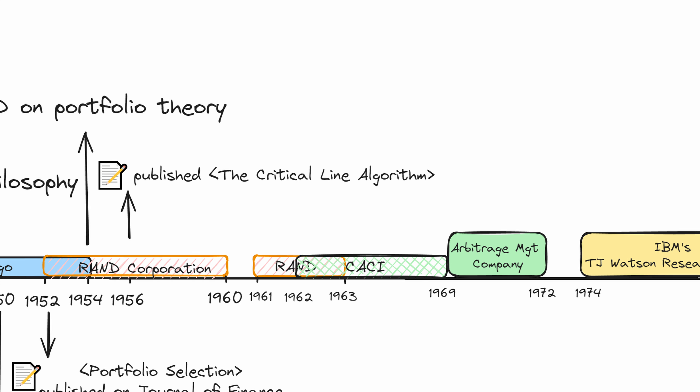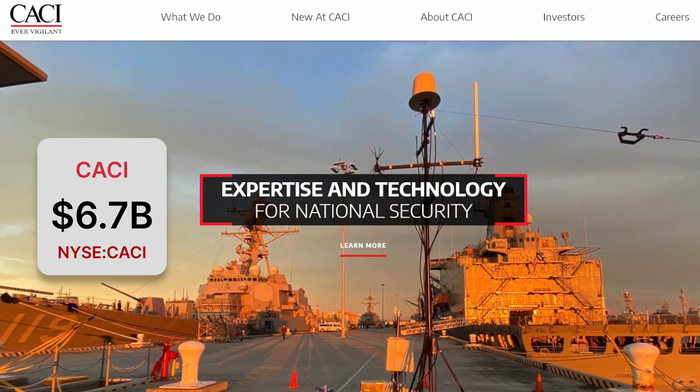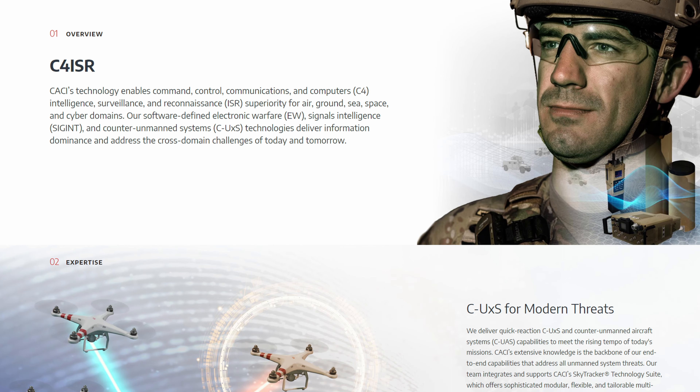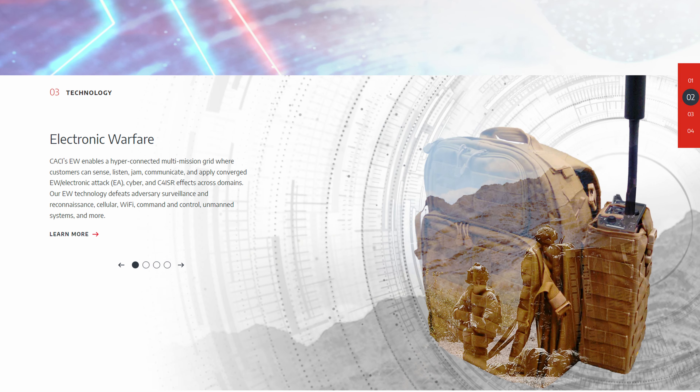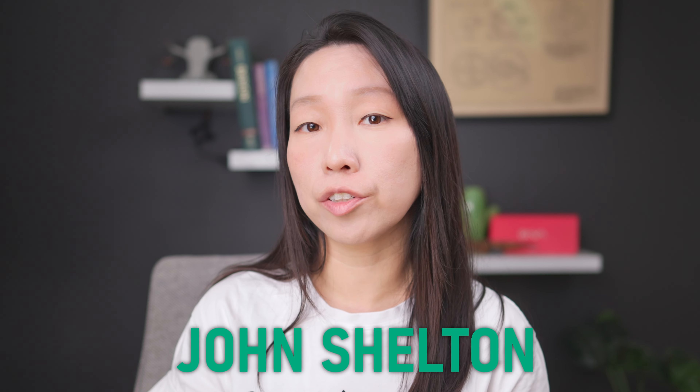But Markowitz didn't stop there. His work at RAND led him to the frontiers of computer science, where he developed a programming language that paved the way for modern simulation models. In 1962, with a modest $2,000 initial funding, Harry co-founded what would become CACI International — now a $6.7 billion public company delivering expertise and technology to US government customers for critical national security missions. In 1968, Markowitz joined the Arbitrage Management Company founded by Michael Goodkin. Together with Paul Samuelson and Robert Merton, who are also Nobel Prize winners, they developed a computer program to trade using convertible arbitrage strategy — the first known attempt at computerized arbitrage trading. Markowitz took over as CEO in 1970, and AMC was sold to Stuart & Co. in 1971.